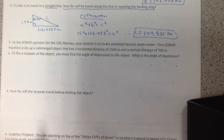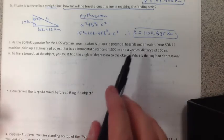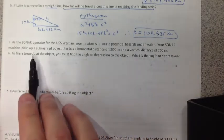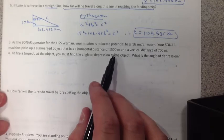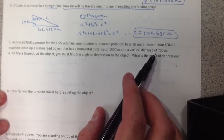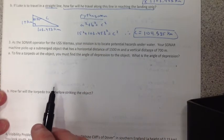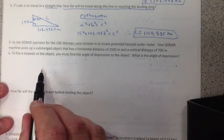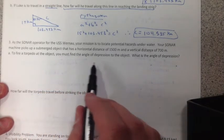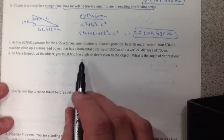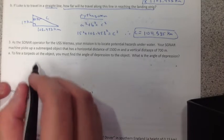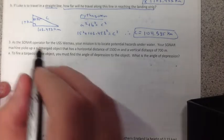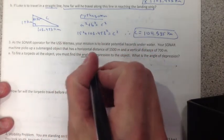You are a sonar operator on the USS Foranau, and your mission is to locate potential hazards under the water. Your sonar machine picks up a submerged object that has a horizontal distance of 1,500 meters and a vertical distance of 700 meters. Just like number 2 right above it, you fire a torpedo at it and you must find the angle of depression. So we're looking for the angle of depression this time.